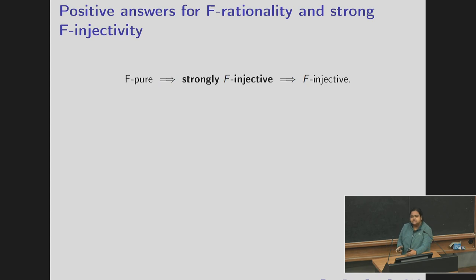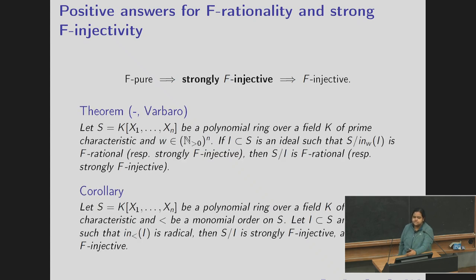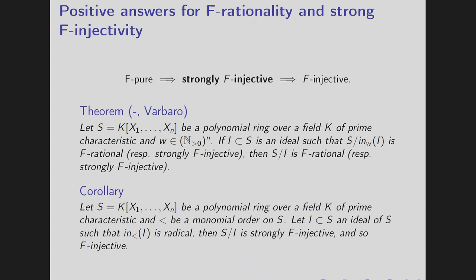So now there is another singularity which fits in between F-purity and F-injectivity. It is strongly F-injectivity. So I will not define this here. This is F-injective plus F-full. And we give positive answers for F-rationality and strong F-injectivity. Then we say that let S be a polynomial ring over prime characteristic, w be a weight ordering. If I be an ideal such that S mod initial ideal has F-rational or respectively strongly F-injective then S mod I has that kind of singularities. So one important corollary is that if S be a polynomial ring of prime characteristic and less than be a monomial order such that initial ideal is radical then S mod I is always strongly F-injective. In particular this is F-injective.